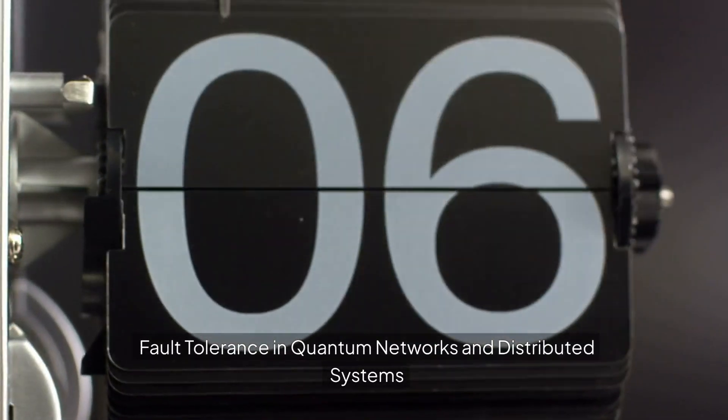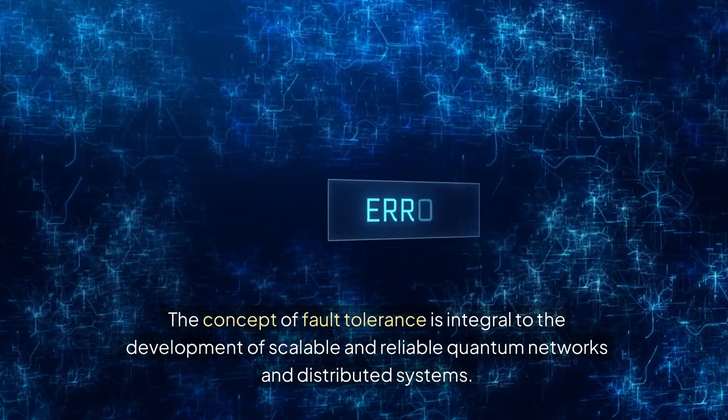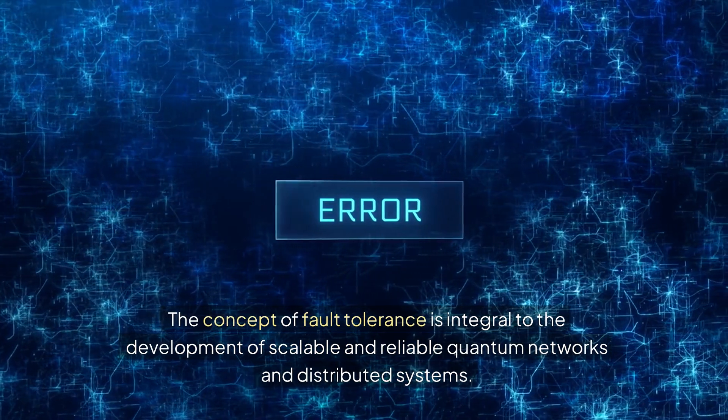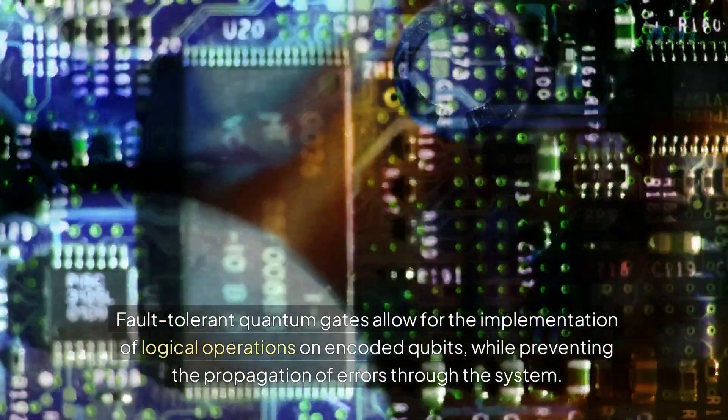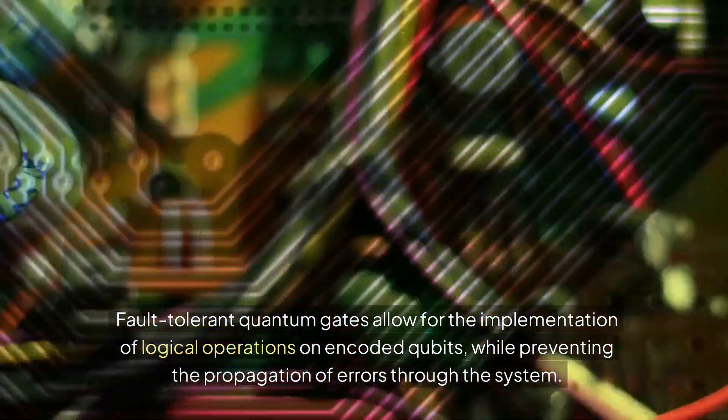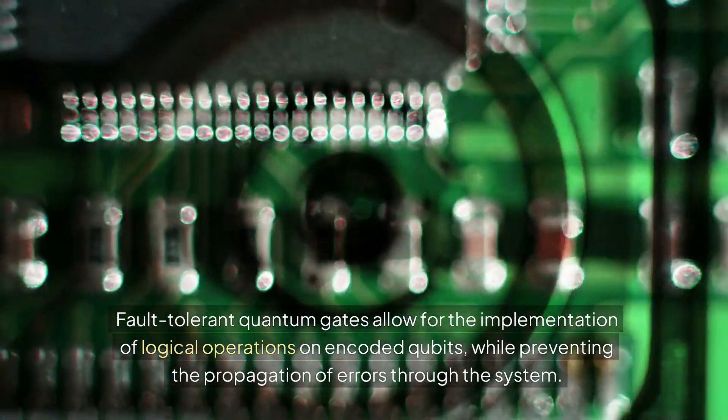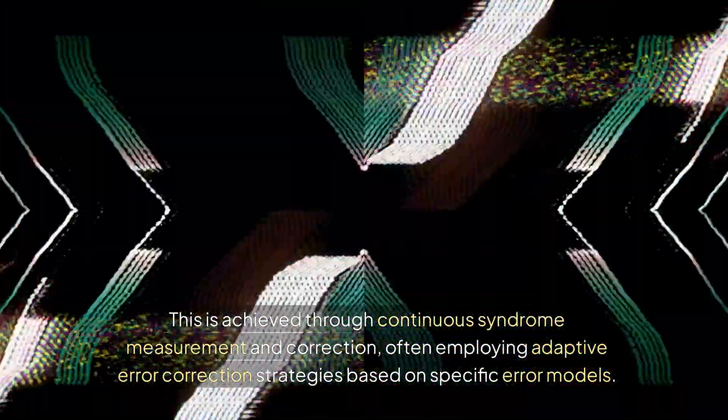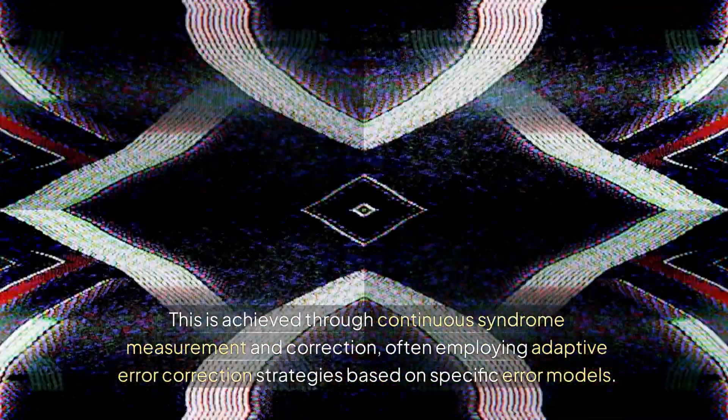Fault Tolerance in Quantum Networks and Distributed Systems: The concept of fault tolerance is integral to the development of scalable and reliable quantum networks and distributed systems. Fault-tolerant quantum gates allow for the implementation of logical operations on encoded qubits while preventing the propagation of errors through the system. This is achieved through continuous syndrome measurement and correction, often employing adaptive error correction strategies based on specific error models.